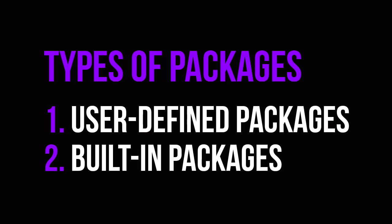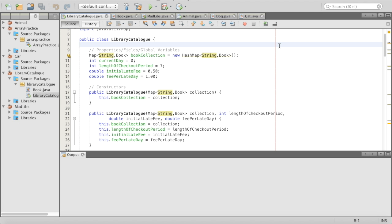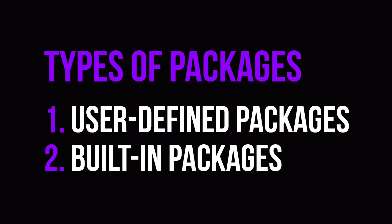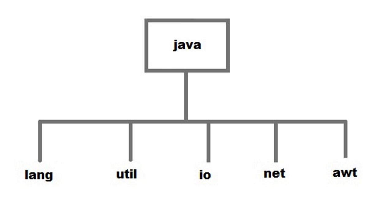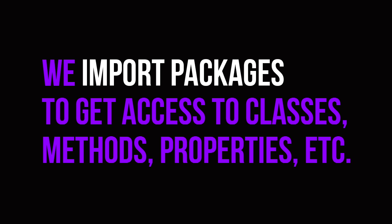There are two main types of packages: built-in packages and user-defined packages. Everything that we've created is a user-defined package — our library catalog, our array practice, our animal. But there are actually many that are built into Java that we've been using without knowing it. If you look at this chart, we have java.util, java.lang — a bunch of things that come with us. Sometimes we actually import these into our programs so we can use the stuff declared in those packages — the methods, the data types, stuff like that.